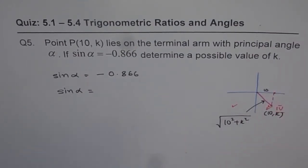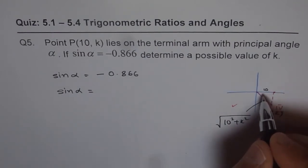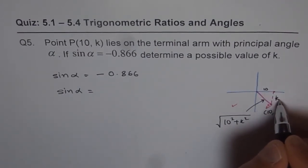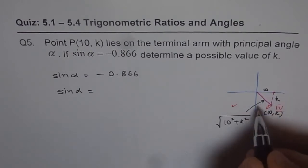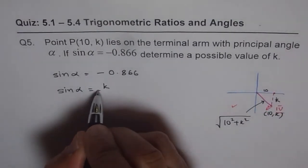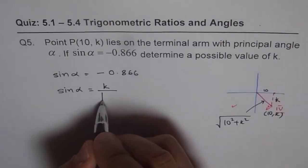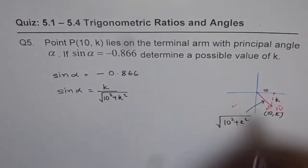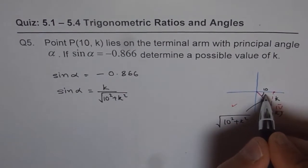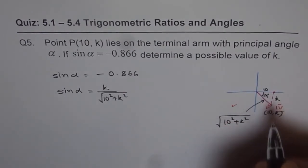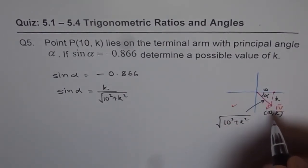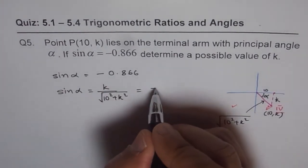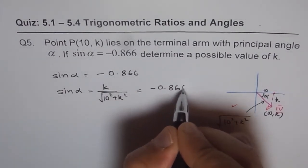Therefore, sin alpha is going to be: the opposite side, which is k for us, divided by the square root of 10 squared plus k squared. That is what sin alpha equals in this position, where we are considering alpha to be the acute angle. The value given to us is negative 0.866.